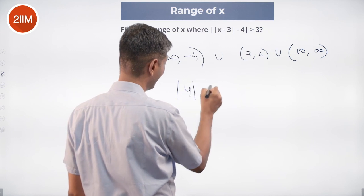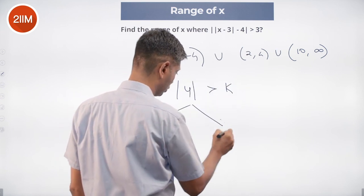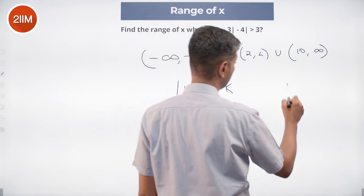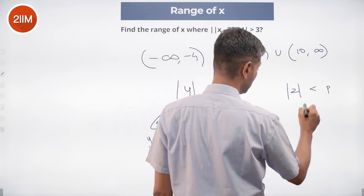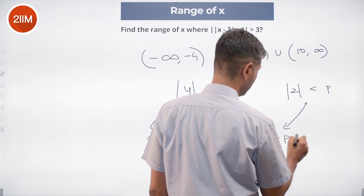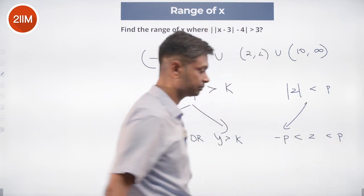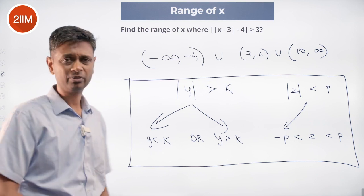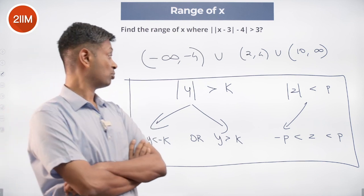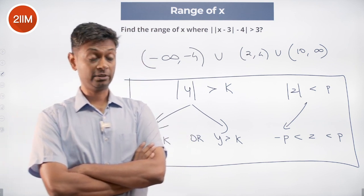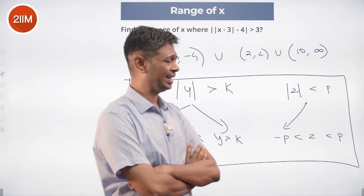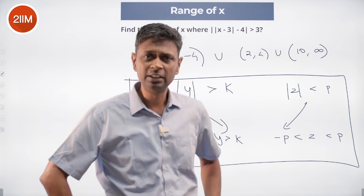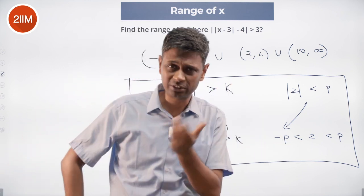There are beautiful fundamental ideas here. If you are solving for mod y greater than k, you solve for y greater than k or y less than minus k. If you are solving for mod z less than p, you solve for minus p less than z less than p — z is stuck between minus p and plus p. This is super important for any modulus inequality question. We always break it into these two parts. Note that k and p are numbers, not variables.